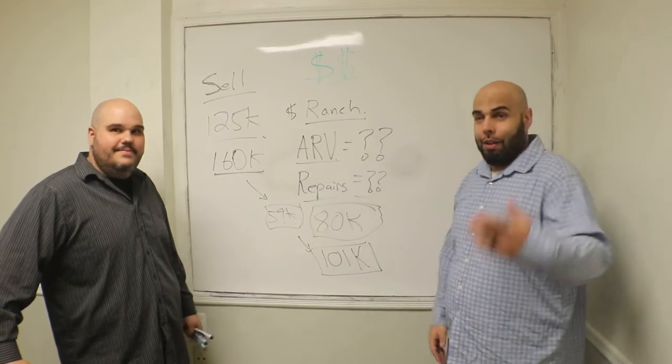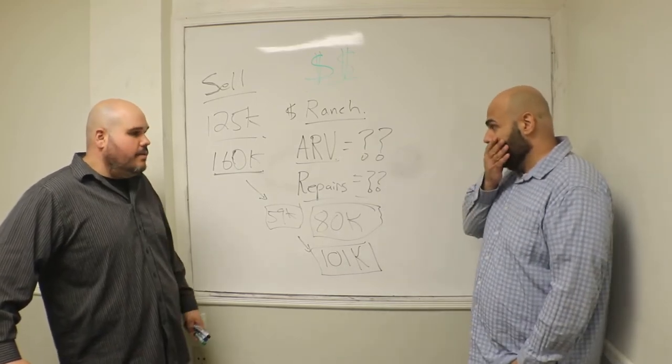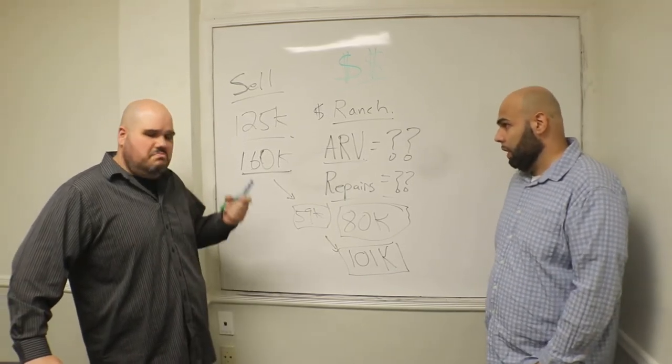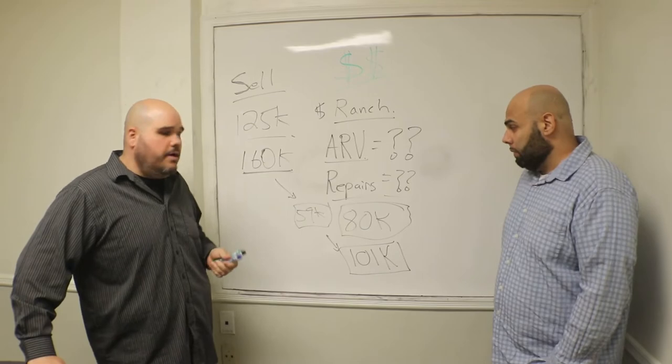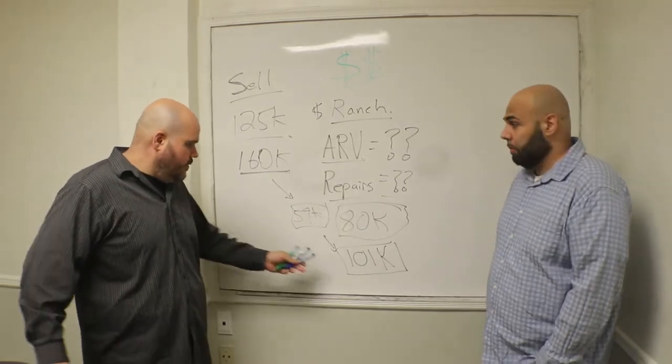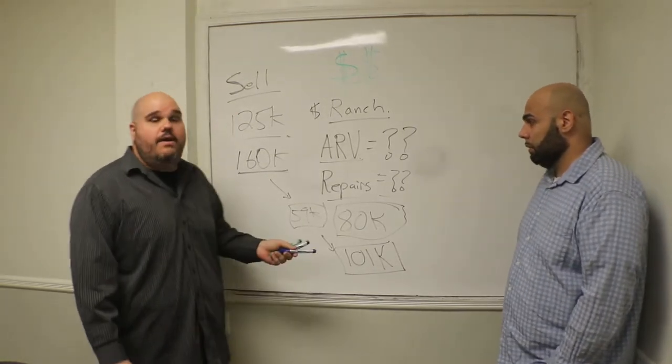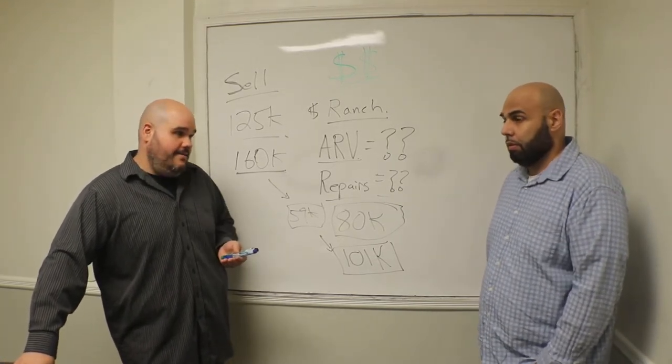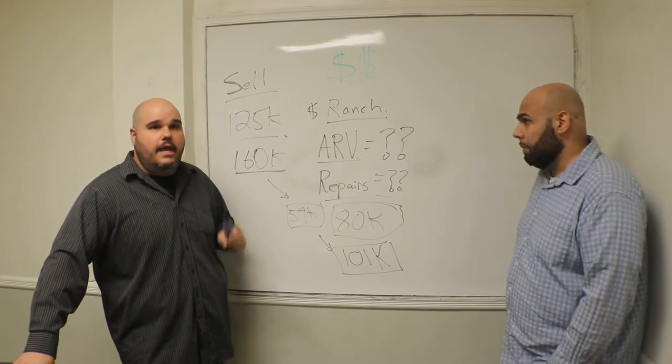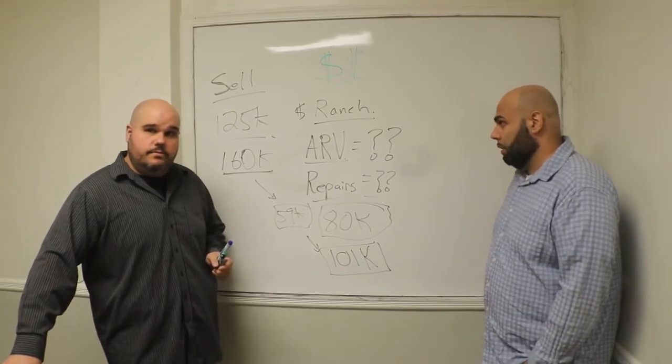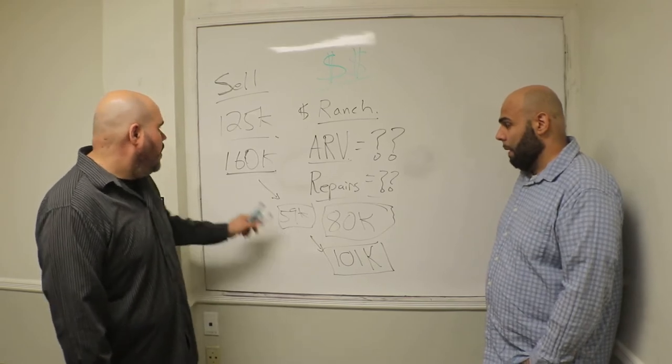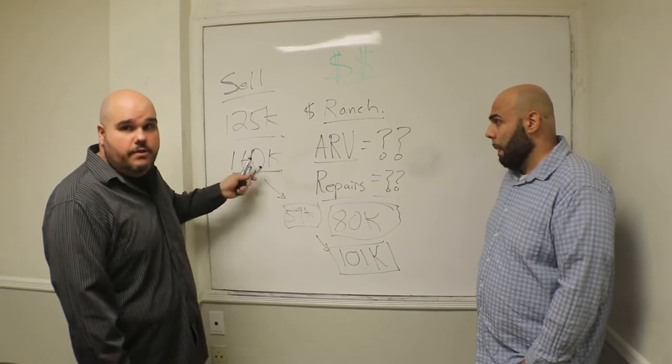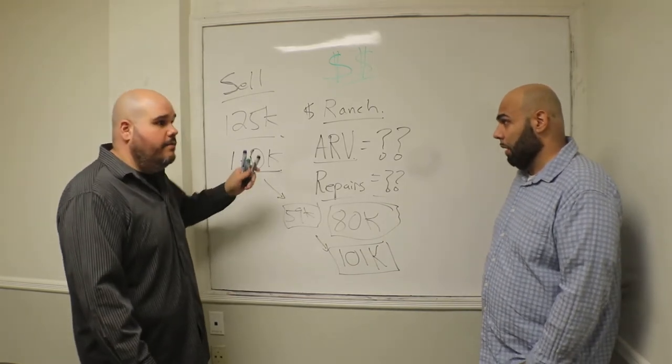So we had it locked in at 160. Now the clock's ticking. Title issues like crazy. Well, it wasn't title. The guy was still off the grid a little bit. He wasn't responding to emails, wasn't responding to the title company. We're sitting here with a contract at 101, a buyer at 160, 59K on the line. And this guy, what's going on?